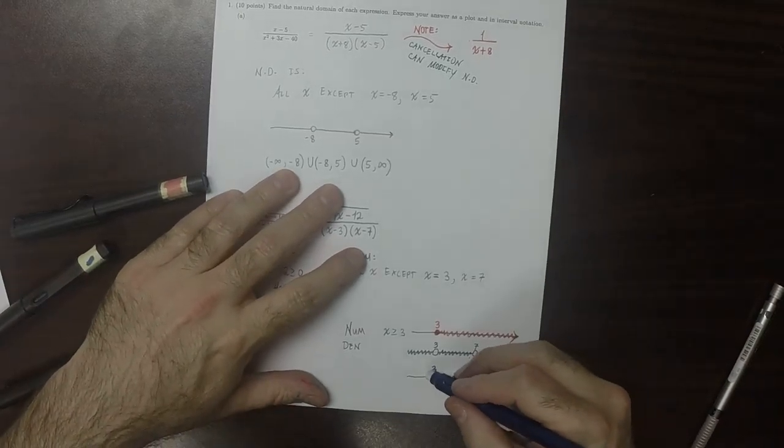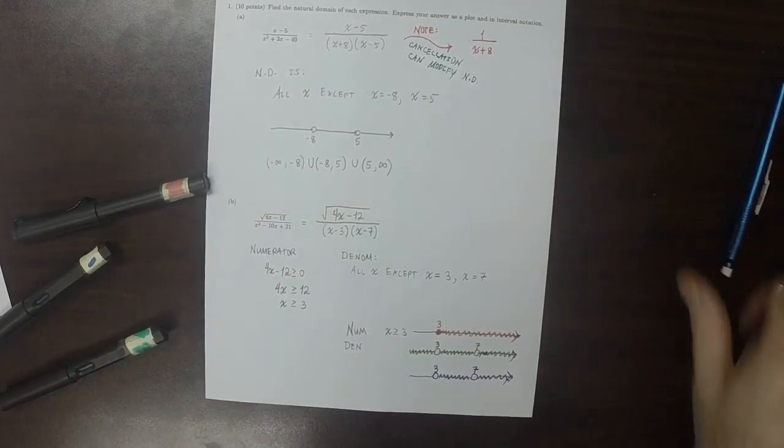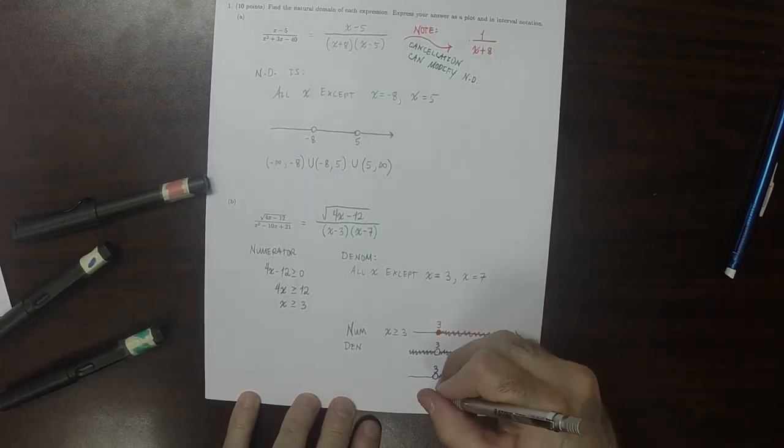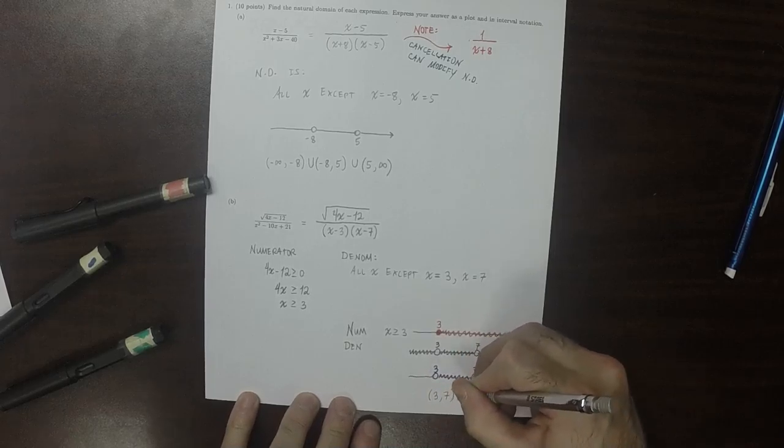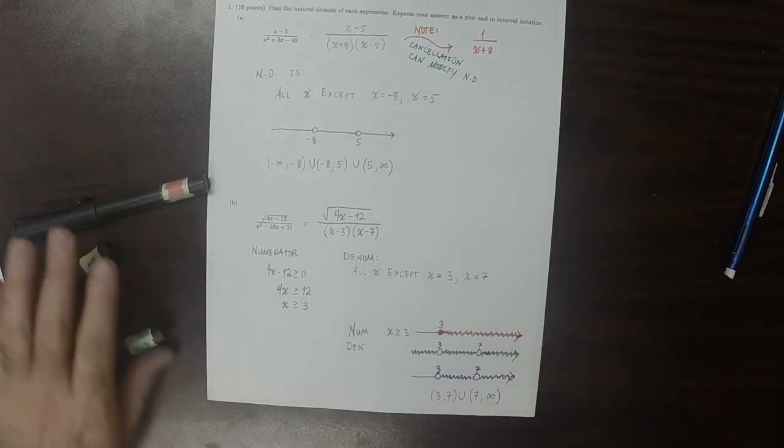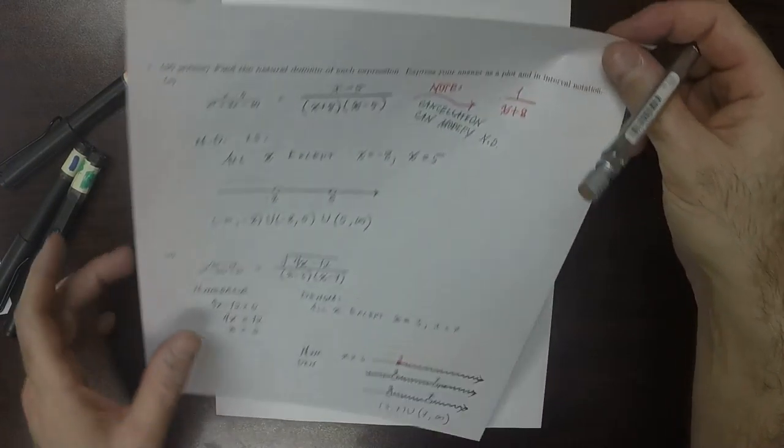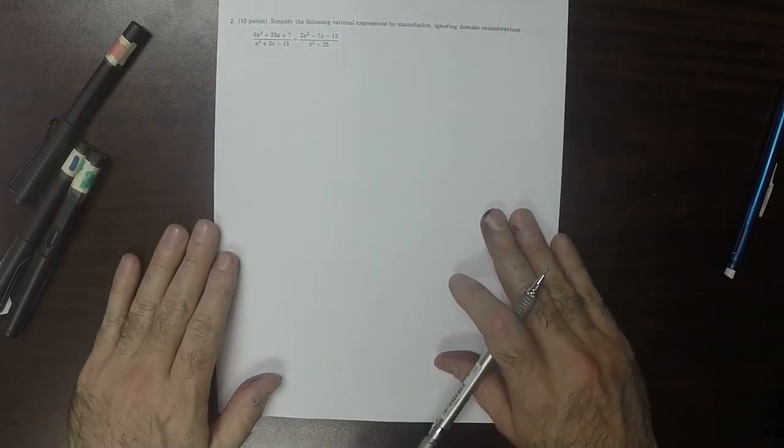Not including 3, not including 7, and written in interval notation, that's 3 to 7 union 7 to infinity. Question 2.